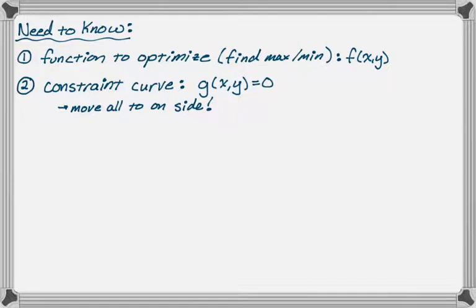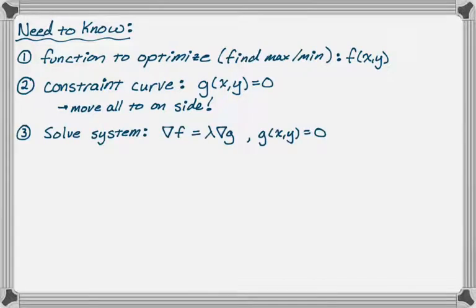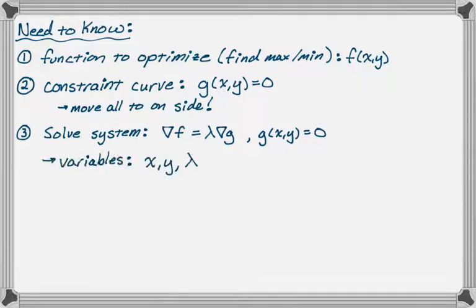The next thing we want to do is solve the system. The system is going to look like: the gradient of f equals lambda times the gradient of g, and g(x,y) equals zero. There are actually three variables: x, y, and lambda.